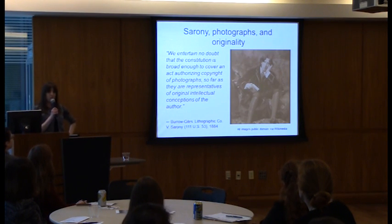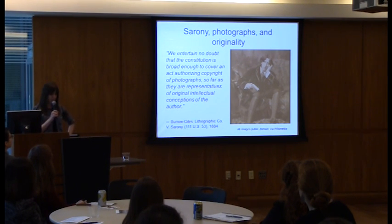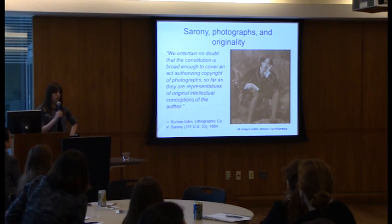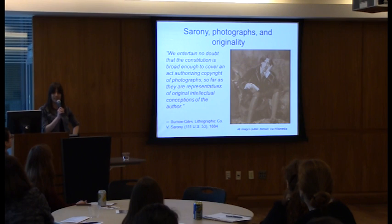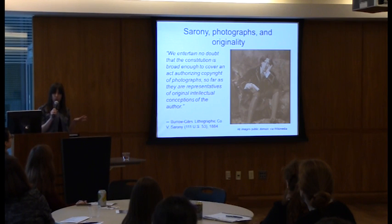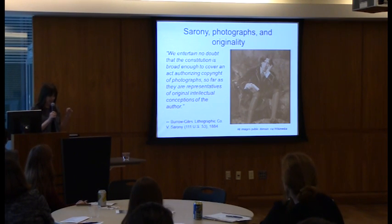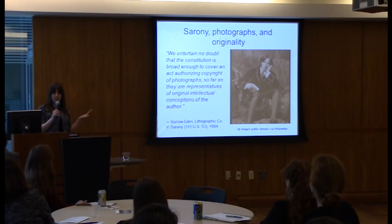In 1884, New York portraitist Napoleon Sarony sued the Burrow-Giles Lithographic Company for selling reproductions of his well-known photograph Oscar Wilde No. 18. While Congress had extended copyright protection to include photographs nearly 20 years earlier in 1865, the newness of the technology kept public opinion suspicious about what level of creative energy was involved in photography. However, Sarony was widely known not as a photographer but as a positioner — he took great care arranging scenes, quite famous for the couch that Oscar Wilde was seated at, and in the end had an assistant actually operate the camera itself.